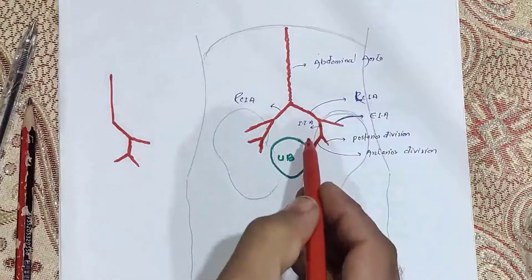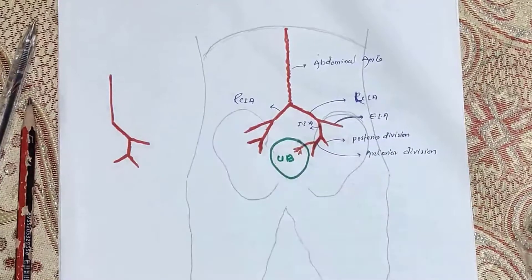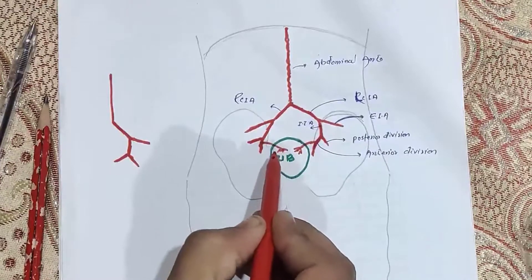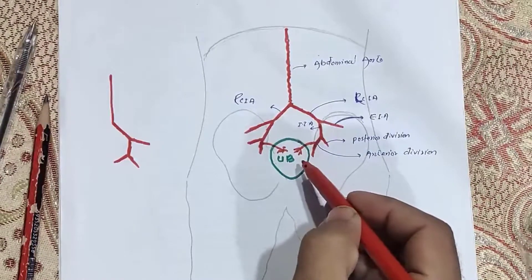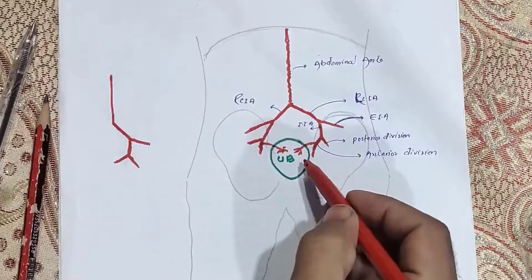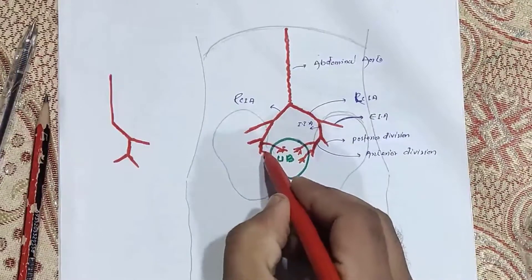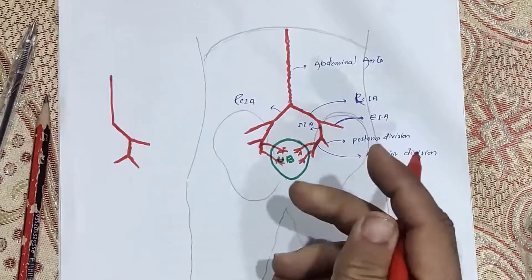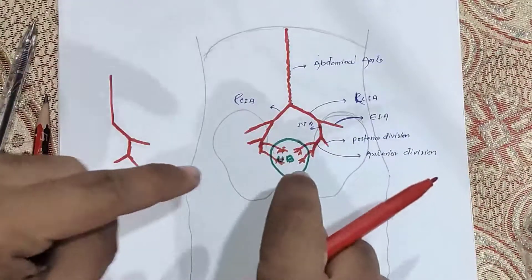From the anterior division there are some arteries which supply blood to the urinary bladder. The first group are called the superior vesical arteries — same from both sides. Then there is another branch called the inferior vesical arteries — same from both sides. These are the two branches which are mainly supplying blood to the urinary bladder.